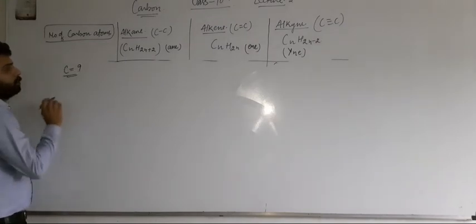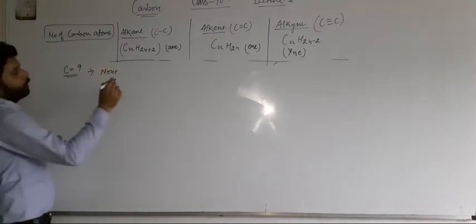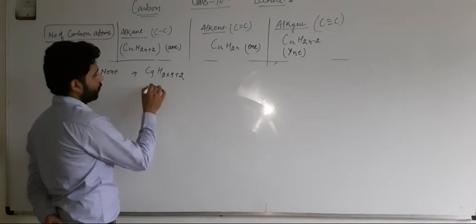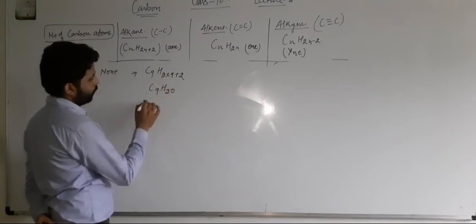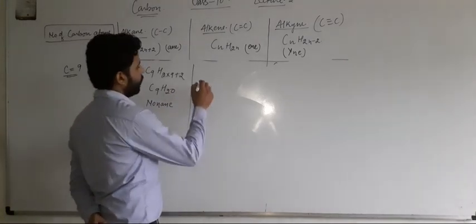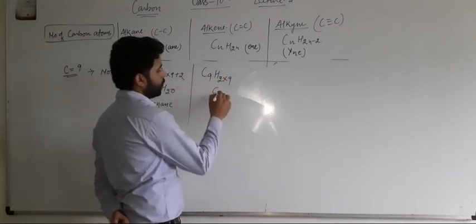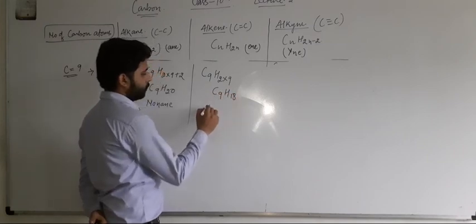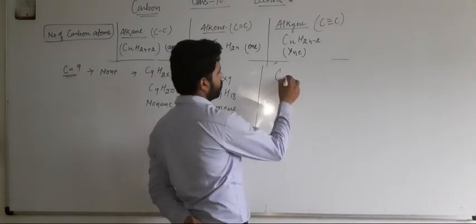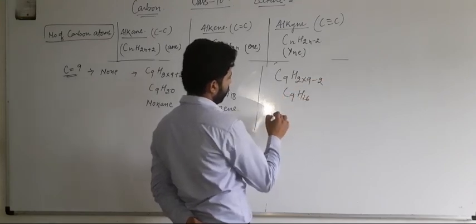For nine carbons, nonane is C9H2 into 9 plus 2, which is C9H20. Nonene is C9H18. And nonyne is C9H16.